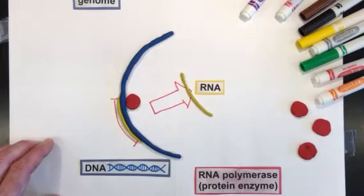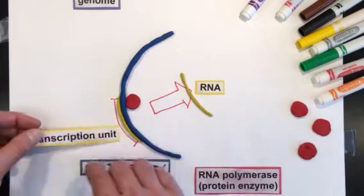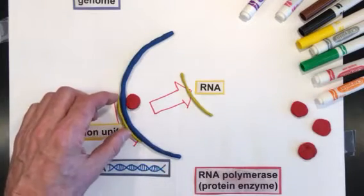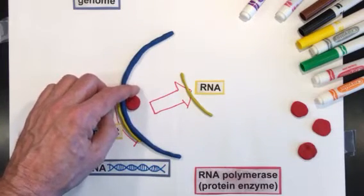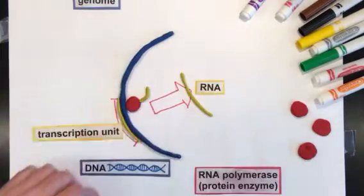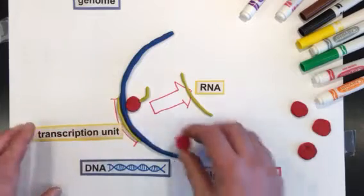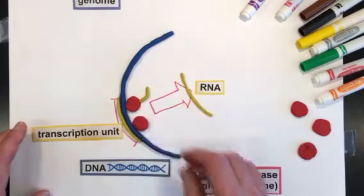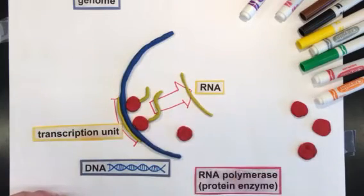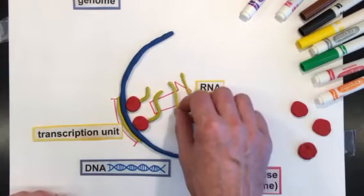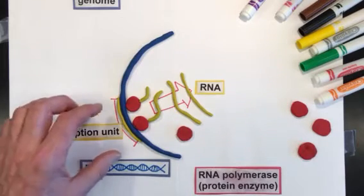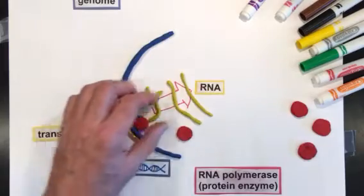The function of RNA polymerase is to bind to this region and copy it into RNA. That process is called transcription, and so this part of the DNA is referred to as the transcription unit. The RNA polymerase binds and then begins to transcribe the DNA into RNA as it slides down the transcription unit of DNA. As it does, the RNA gets longer until it reaches the end of the transcription unit, releases the RNA polymerase, and full-length RNA. That's a process called transcription.